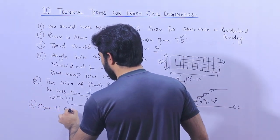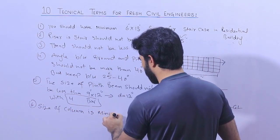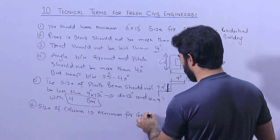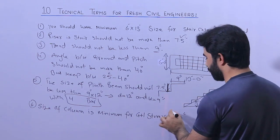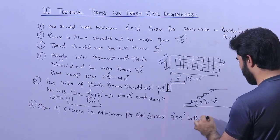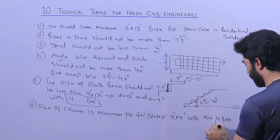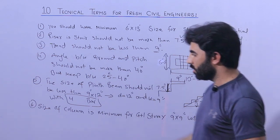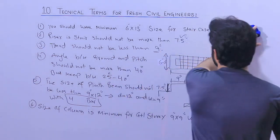The sixth term is the size of the column. For a G plus one story building, the minimum column size is 9 inches by 9 inches, with a minimum of 4 bars. Those bars should be 12 millimeter diameter. This is the standard size for columns in a G plus one residential building.